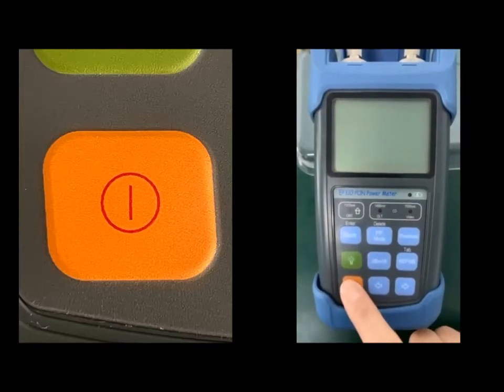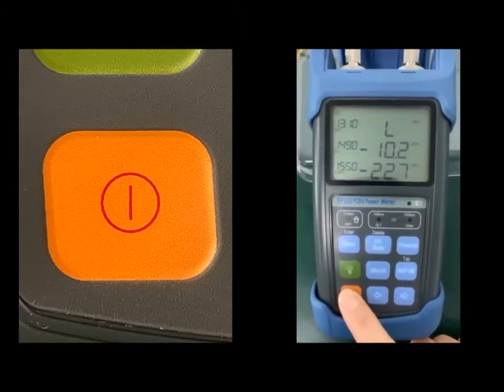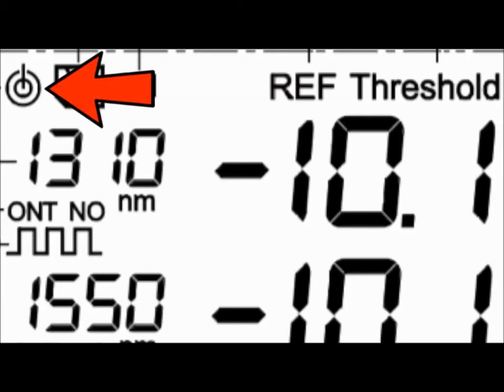Turn the meter on using the orange power button. Once the unit is turned on, the same power button can be used to toggle the auto shutdown on and off. If the icon is visible on the top left of the screen, it means the meter will be in the auto power off mode.